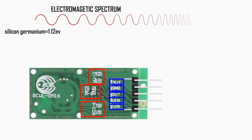The RCWL-0516 microwave radar proximity sensor pinout: 3V3 is the output from the voltage regulator, not the power pin. VIN is the power input pin — this sensor can be powered by a voltage range of 4 to 28 volts. GND is the ground pin. OUT is the output pin, which goes high when the sensor detects movement and remains low when it doesn't. CDS is used to connect a light-dependent resistor (LDR), which can be used to disable the sensor in bright light conditions.